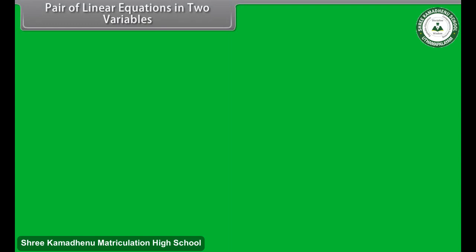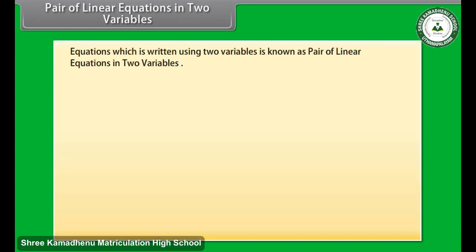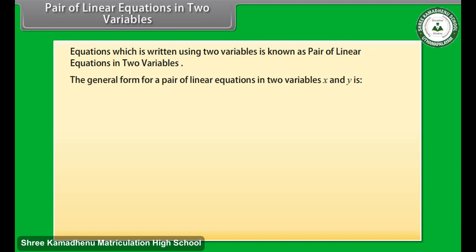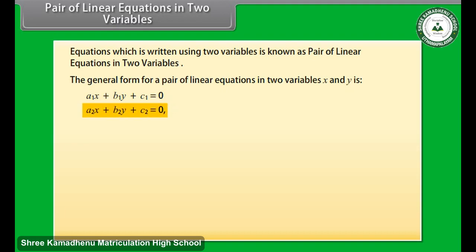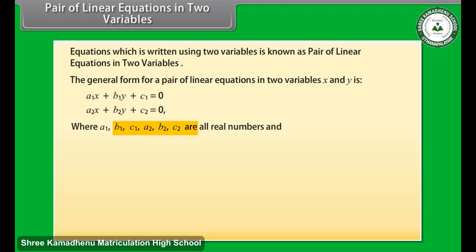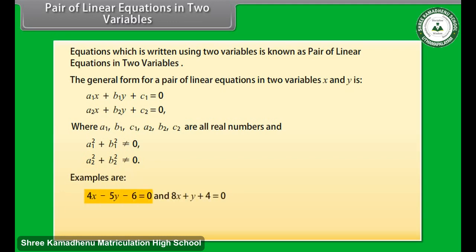Pair of linear equations in two variables: Equations which are written using two variables are known as a pair of linear equations in two variables. The general form for a pair of linear equations in two variables x and y is: a1x + b1y + c1 = 0 and a2x + b2y + c2 = 0, where a1, b1, c1, a2, b2, c2 are all real numbers, and a1² + b1² ≠ 0 and a2² + b2² ≠ 0. Examples are: 4x − 5y − 6 = 0 and 8x + y + 4 = 0; x + y = 12 and 7 = y.